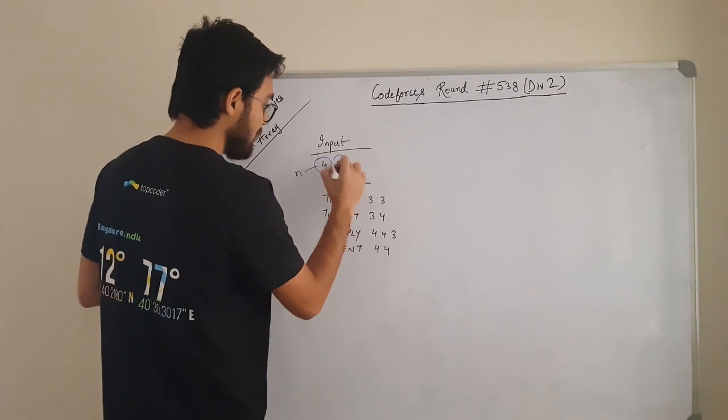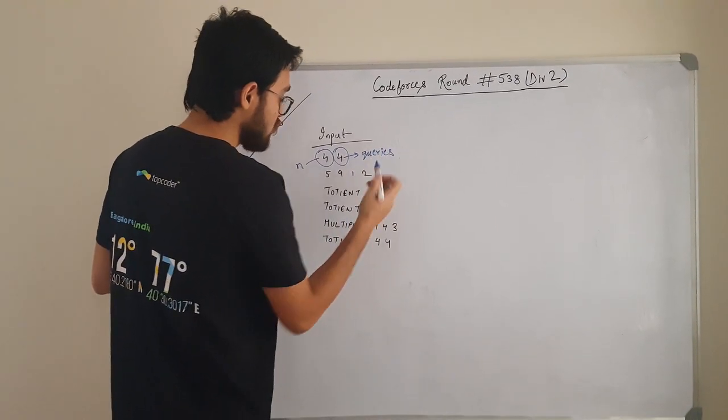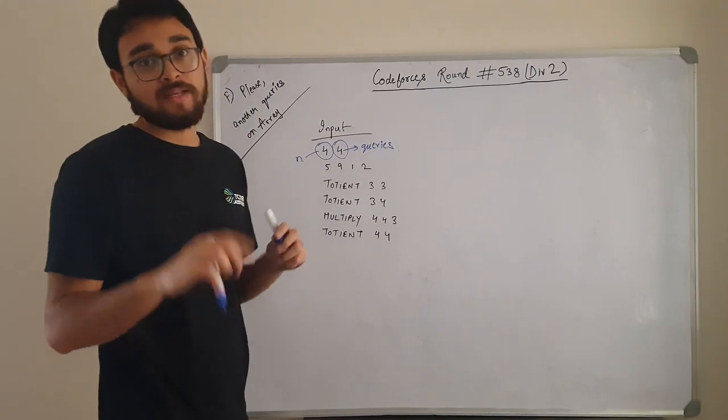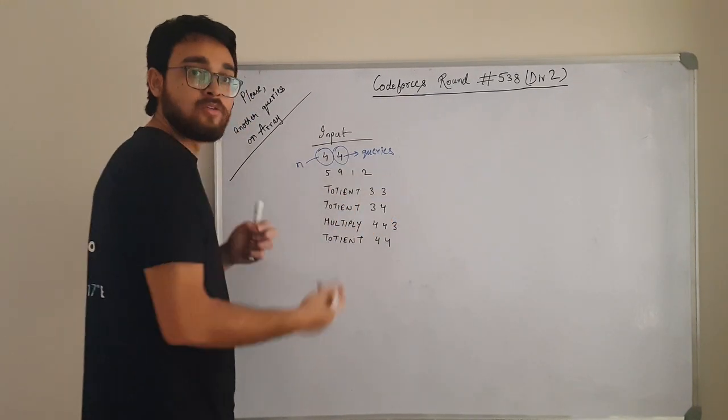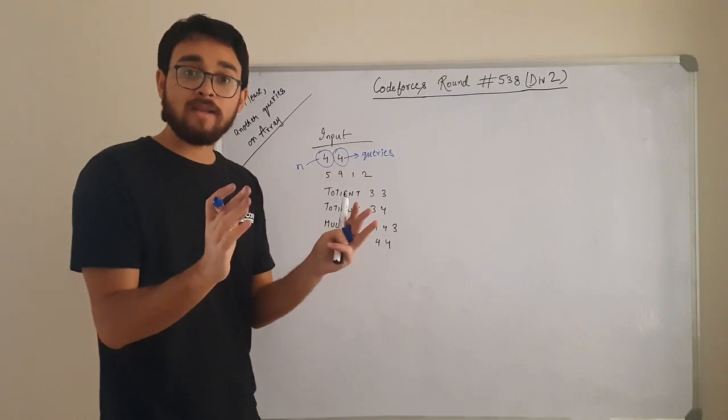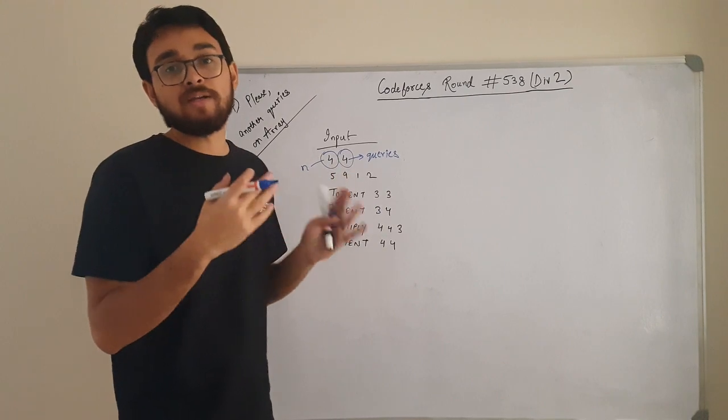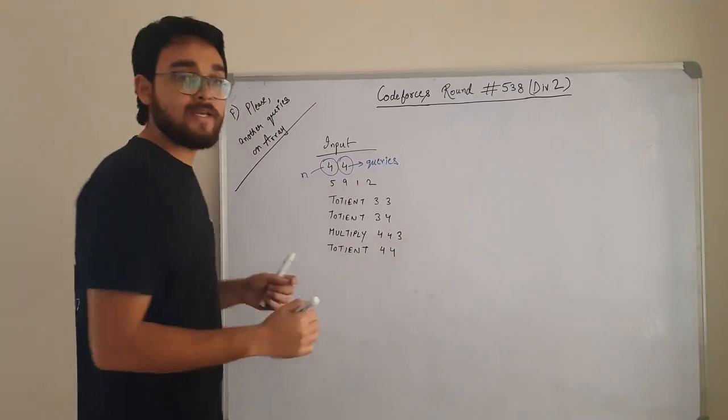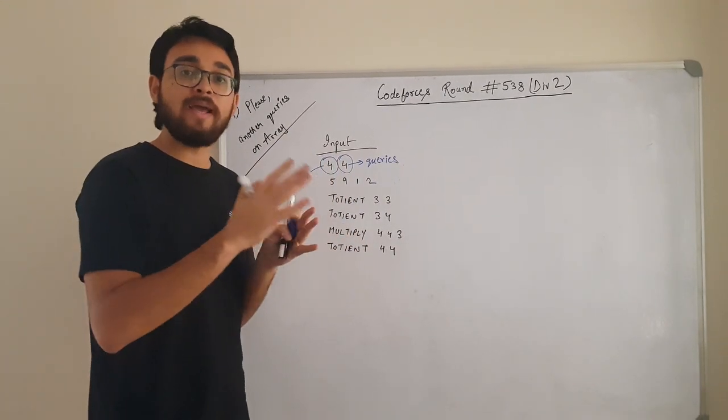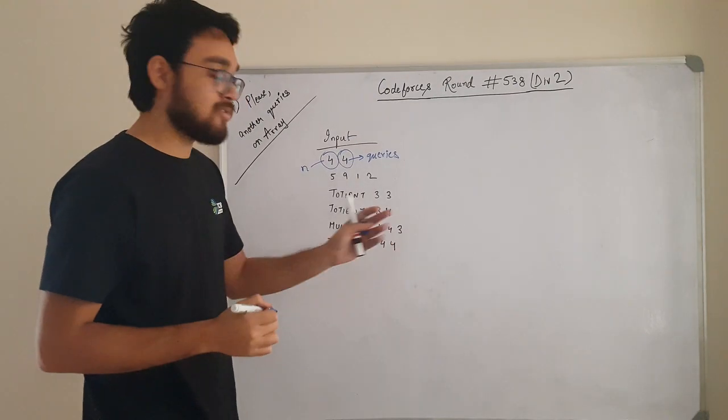Now we have 4, this is the number of queries. There are 2 types of queries: one is torsion L and R. In the range L to R, you need to product all the elements present and then return the torsion value. And the multiply is, from L to R, you need to multiply all the elements with this given number, 3 sorry.